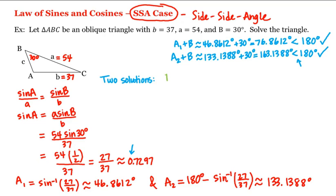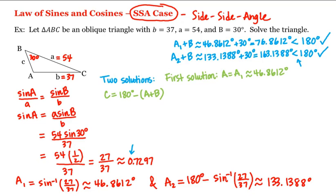The first solution is when A is equal to A1, or approximately 46.8612 degrees. If we know A and we know B, then we can find C because the angle measures in a triangle add up to 180 degrees. That is, C equals 180 degrees minus (A plus B), which is approximately 180 minus 46.8612 minus 30 degrees, which equals 103.1388 degrees.